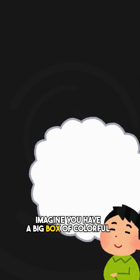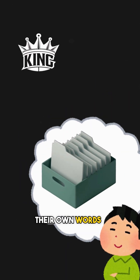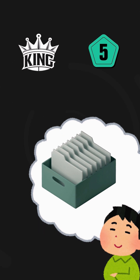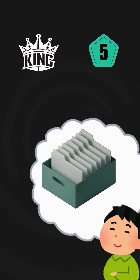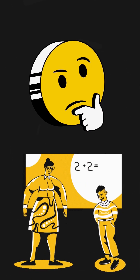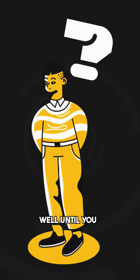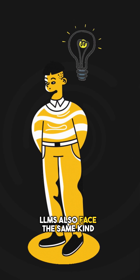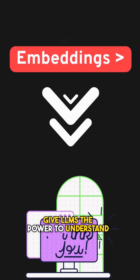Imagine you have a big box of colorful blocks. Each block has its own word with a number like 5, 28, or 101. These are like the token IDs we saw earlier. If you are a child and I asked you to build something cool out of those blocks, you probably can't do it well until you understand them. LLMs face the same kind of problem — and embeddings give LLMs the power to understand them.